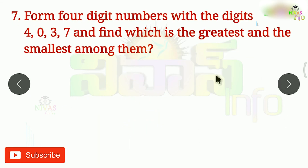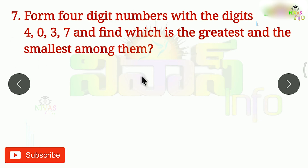Next problem is the 7th problem. What is the 7th problem? Form 4-digit numbers with the digits 4, 0, 3, 7 and find which is the greatest and the smallest among them. Here, 4 digits — we have to write 4-digit numbers with 4, 0, 3, 7. We have to write numbers, and after writing the numbers, we have to find the greatest and smallest. The number is 4,037.